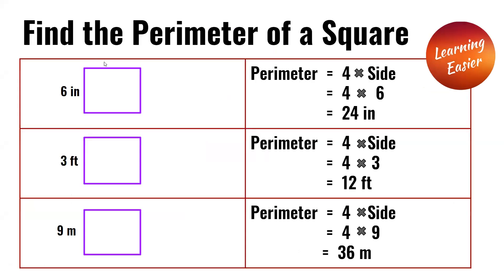Find the perimeter of a square. In the first square, the side is 6 inches. 4 times 6 equals 24 inches. In the second square, the side is 3 feet. 4 times 3 equals 12 feet.